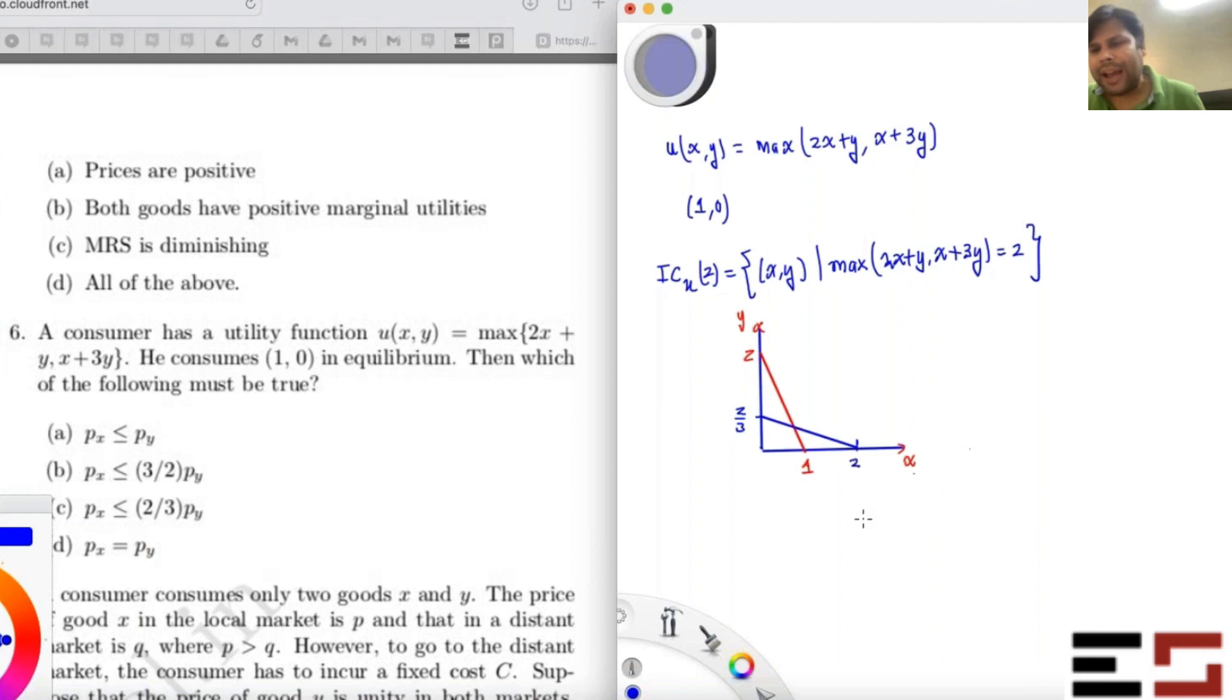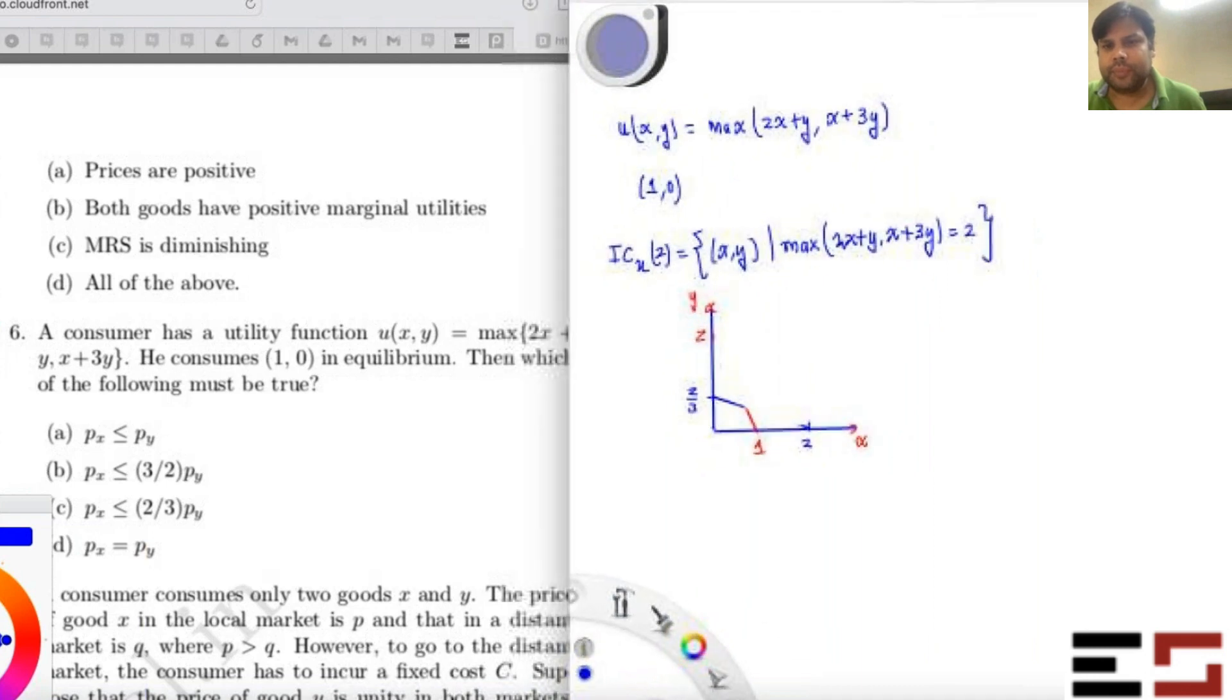So again, if you just apply the same procedure that you have learned in the lecture, you will get that this is the indifference curve. Is that fine? So this is how the indifference curve looks, yes or no?